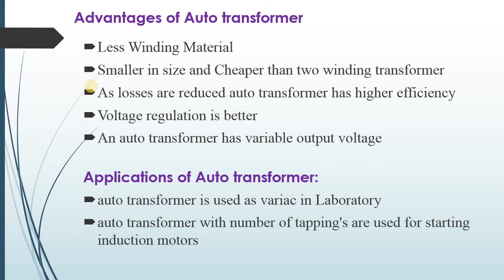Advantages of auto transformer: Less winding material is required than in a two-winding transformer, as it consists of a single winding. It is smaller in size and also cheaper than a two-winding transformer. As windings are reduced, losses are reduced, and therefore the auto transformer has higher efficiency. Voltage regulation is better in an auto transformer, and it has variable output voltage.